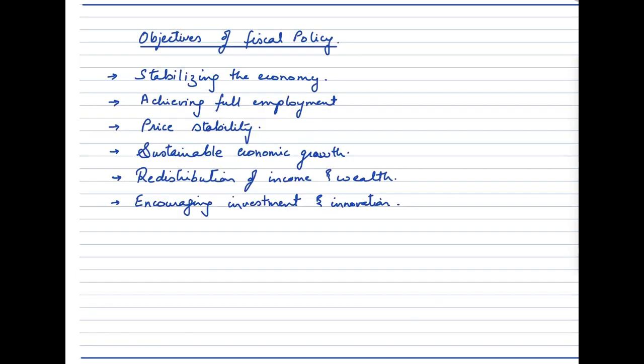The first objective is stabilizing the economy. Economic instability can be caused by a variety of factors — financial crises, excessive debt, policy mistakes, political instability, natural disasters like the 2020 pandemic, or inflationary and recessionary pressures. Fiscal policy helps counteract these economic or business cycles.